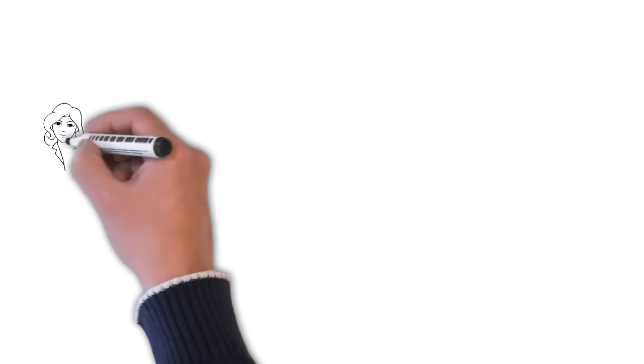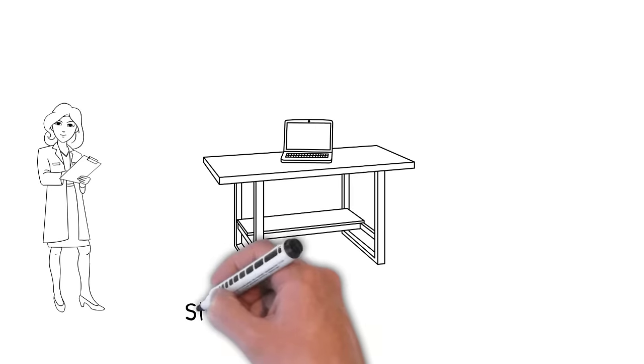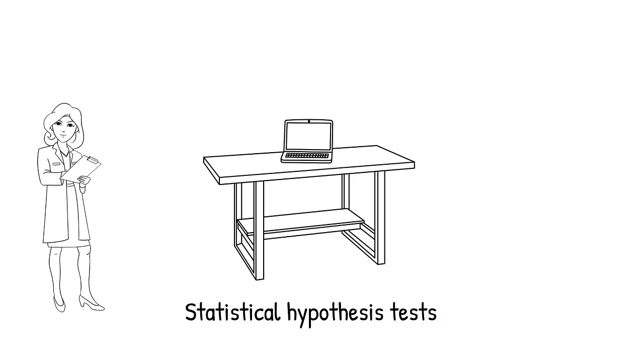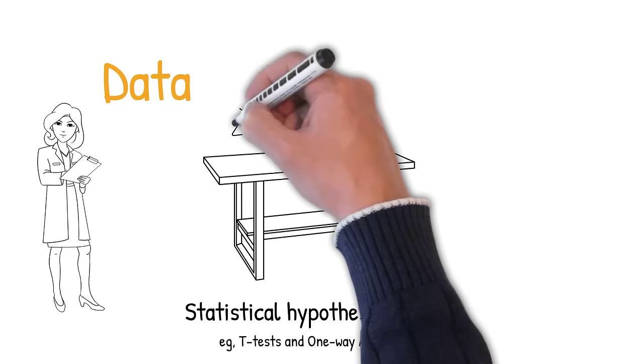To determine the p-value, scientists use what are known as statistical hypothesis tests. Common examples include the student t-test and a one-way ANOVA. Since this is a top-line overview, I will not bombard you with statistical jargon, but instead, pretend we have performed a statistical test using our data.